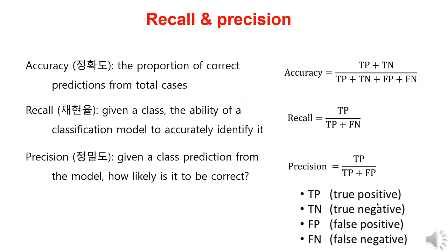Based on the concepts of true positive, true negative, false positive, and false negative, we can calculate the following values. Firstly, accuracy represents the ratio of correctly predicted instances out of the total, which means the fractions of the diagonal elements of the confusion matrix. Recall refers to the ratio of true positive to the sum of true positive and false negative — it indicates how well the classification model detects a given class. Precision, on the other hand, represents the ratio of true positive to the sum of true positive and false positive. It measures, given a class prediction from the model, how likely it is to be correct.